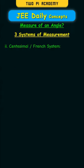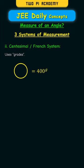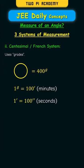And then there is the centesimal or French system which uses grades. A complete circle consists of 400 grades and every grade consists of 100 minutes and every minute consists of 100 seconds.